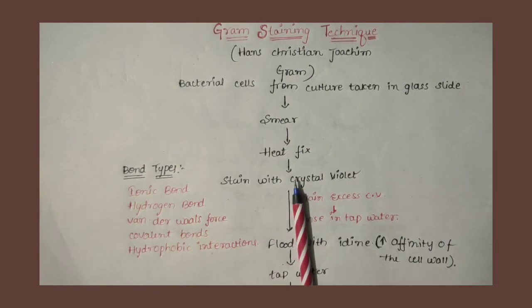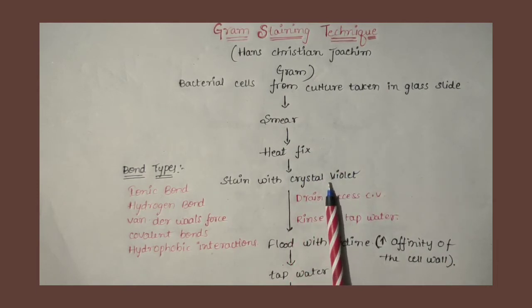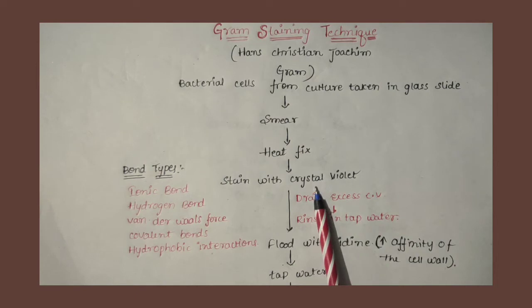Pour crystal violet into the slide. Peptidoglycan layer in gram positive is 50-90%, while gram negative is 10%. Crystal violet binds to peptidoglycan through different bonds.